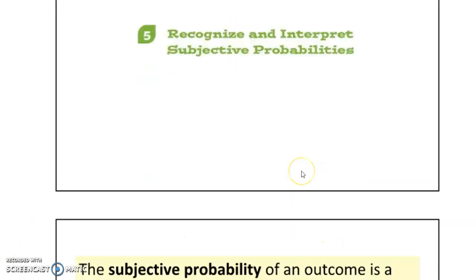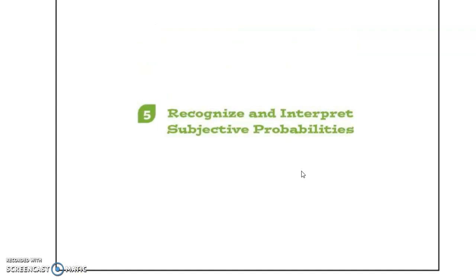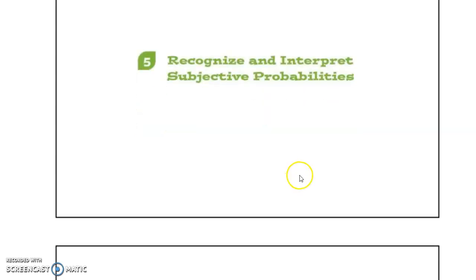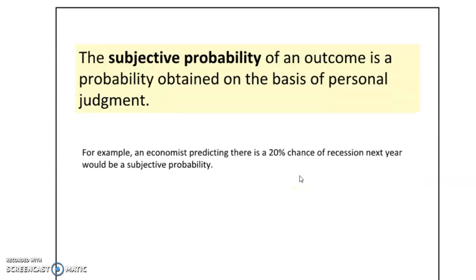Subjective probability is like what you see in a weather forecast. The weather person says it's a 60% chance of rain — it's not classical probability because the weatherman doesn't know everything about the scenario, and it's not experimental probability because the weatherman hasn't done experiments on the weather. What the weatherman has done is looked at the past, weather patterns, and weather models on the computer, and then comes up with a subjective probability based on personal judgment. A 20% chance of recession next year is also not experimental or theoretical — it's subjective, otherwise known as an educated guess.